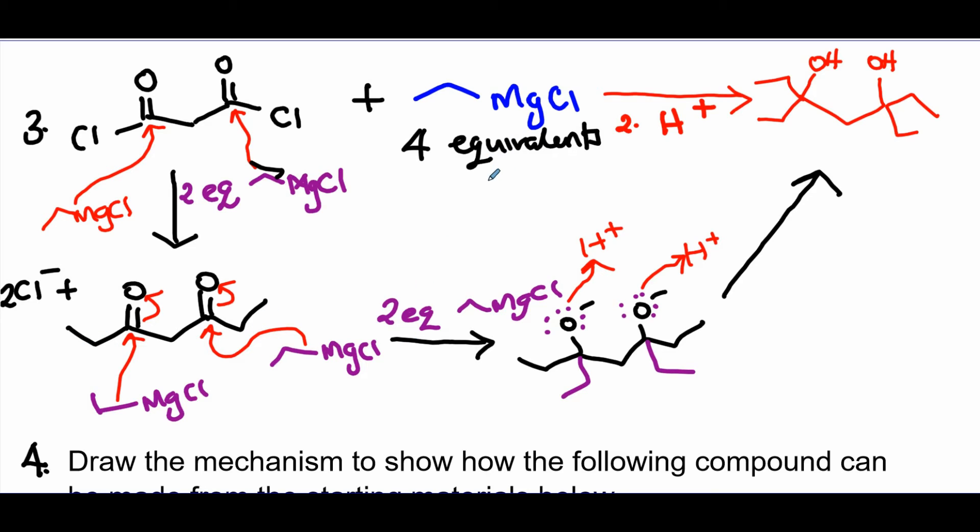Then come with the remaining two equivalents of the Grignard to attack the diketone, to attack this carbonyl, and the other one to attack the other carbonyl. They're going to open up. You get this di-tetrahedral intermediate, which can be quenched by the acid here. We're assuming we have just enough to get the diol tertiary alcohol.